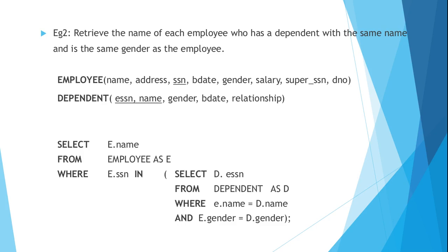Retrieve the name of each employee who has a dependent with the same name and same gender as the employee. Here we have to check two conditions: the employee's dependent should have the same name, and the employee must have the same gender as that of the dependent. The conditions are written in the inner query: SELECT D.ESSN FROM dependent AS D WHERE E.name = D.name AND E.gender = D.gender.